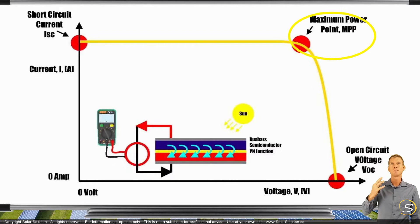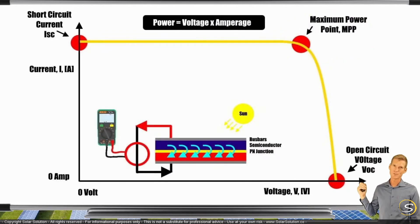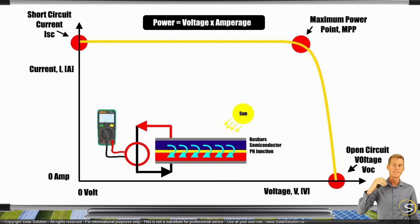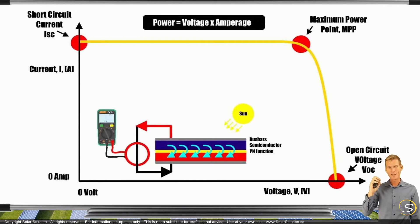Power is the result of current times voltage. You want the highest current and the highest voltage output balanced so you get the highest power output. At the point where the curve starts to bend, this is where you get the maximum power output of a solar panel.